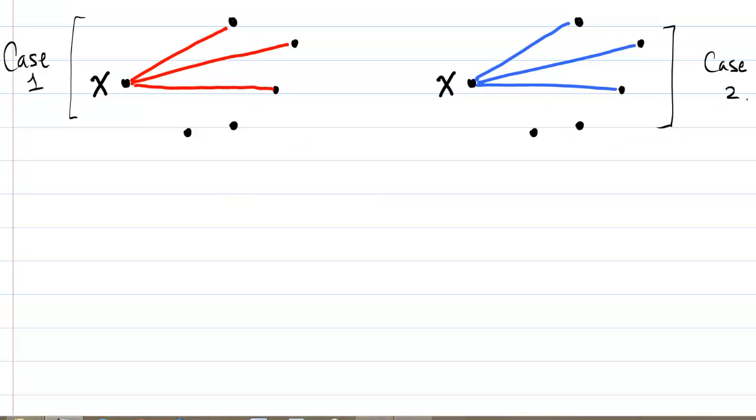So here we have a picture showing the two possible cases. In case one, X has more enemies than friends, so we know he has at least three enemies in the group. We don't actually know his relationship with the other two here, and it's not important for the proof, so we'll leave those blank.